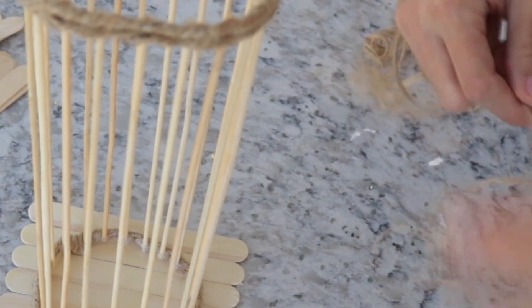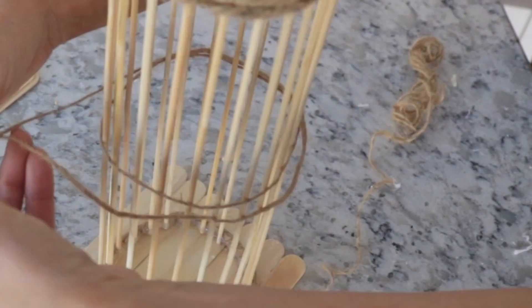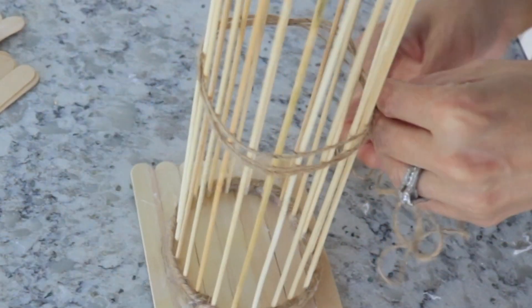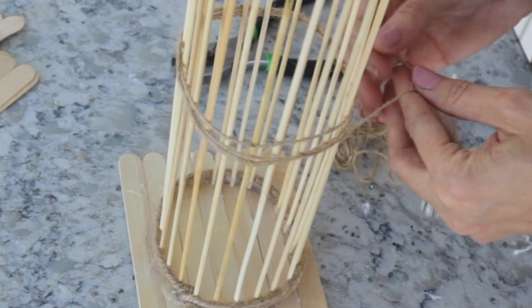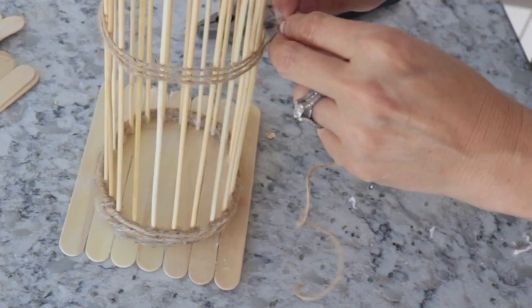Now while the glue is completely drying, I'm taking some smaller twine and I'm going to tie it around about three or four times and then just tie it in a little knot. And this is just going to kind of be like a little decorative piece. And then later on, I'm going to do another one of these as well, so there's going to be one closer to the top and then one closer to the bottom as well.